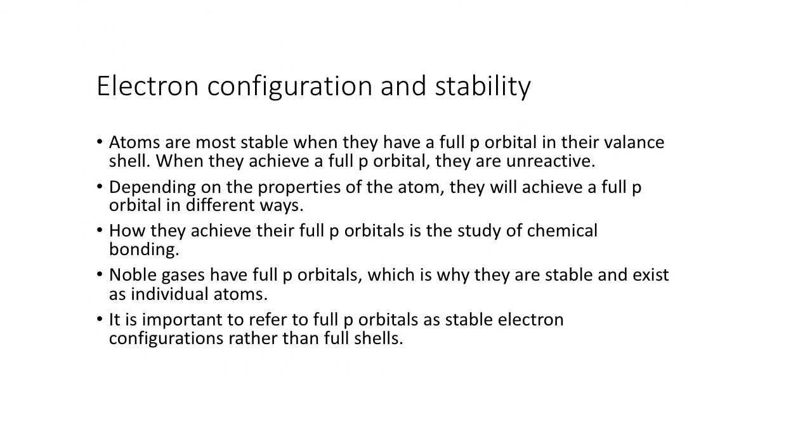So what does it say? Atoms are most stable when they have a full P orbital. You might have heard people talk about full shells and stuff. It's not really a full shell. We're really only talking about the full P orbitals in their valence shell.